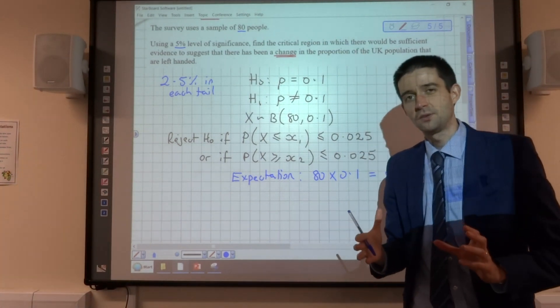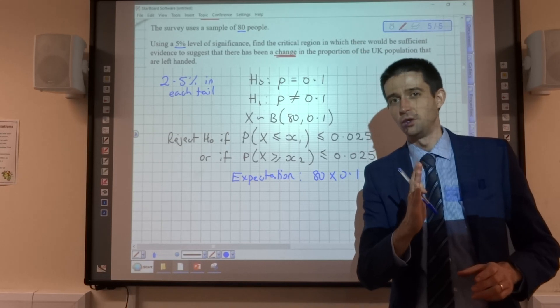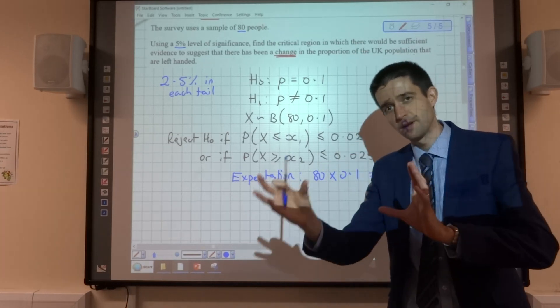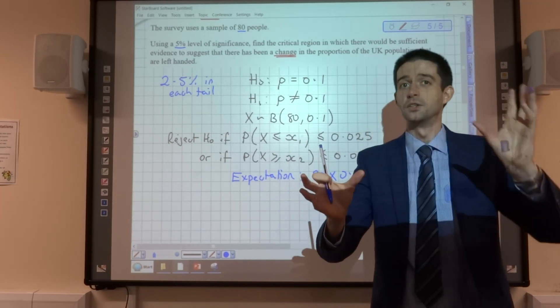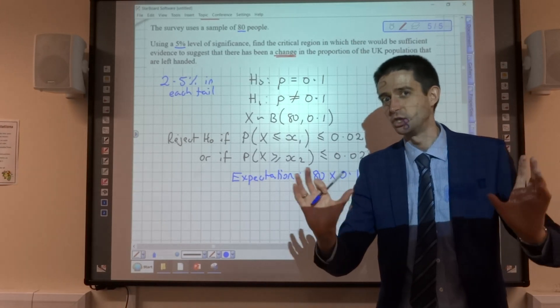And what that gives us an idea for with the two-tailed test is roughly where the middle of the distribution is going to be in terms of the percentage probabilities. So if we find some values lower than 8, then the values the same distance the other side of 8 are likely to be comparable in terms of the percentage chance.